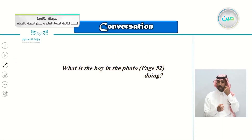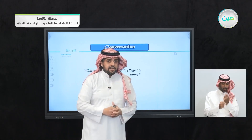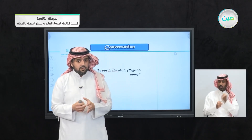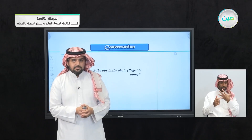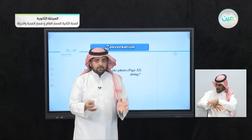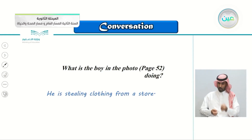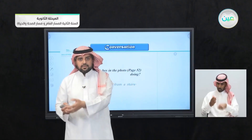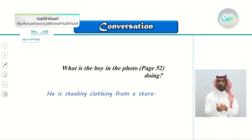What is the boy in the photo doing on page 52? Is he doing something right or wrong — ethical or unethical, moral or immoral? From the picture, he's doing something wrong, something immoral, something unethical. He is stealing clothing from a store. He went to a clothes store and instead of buying the clothes, he is stealing them — putting the clothes inside his jacket so no one can see them. This is wrong and unethical.